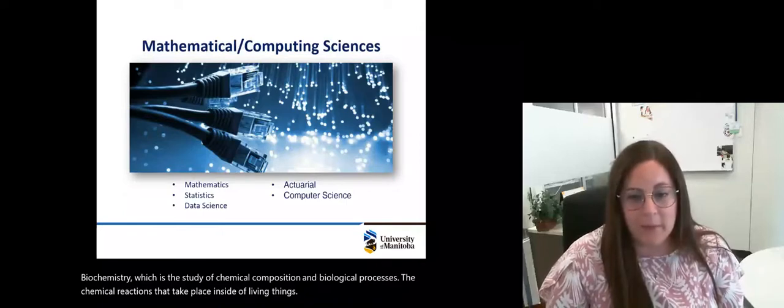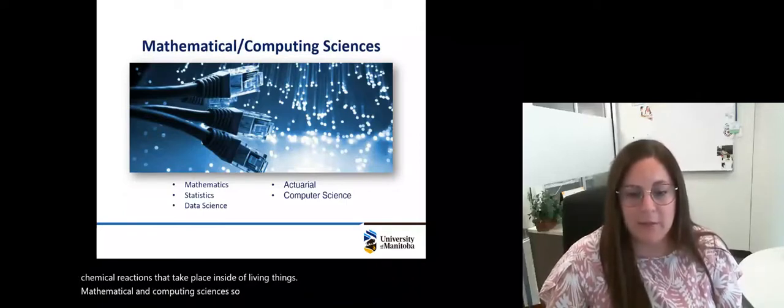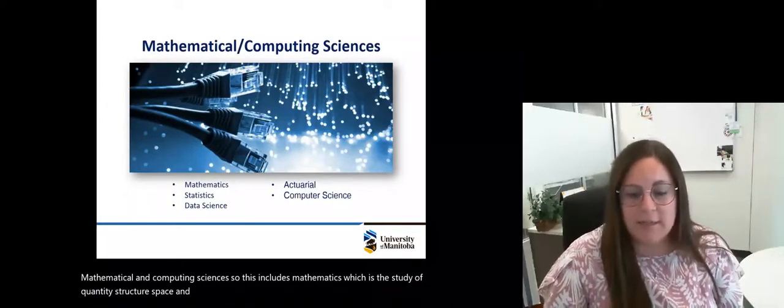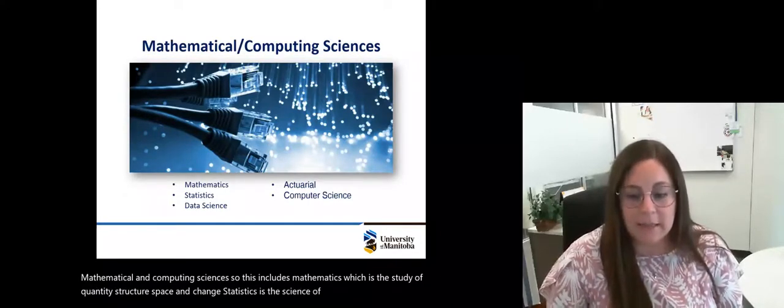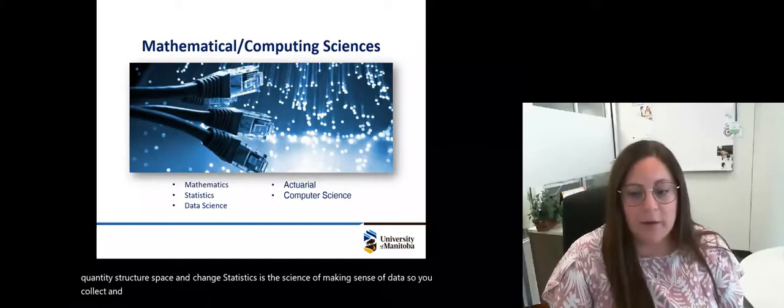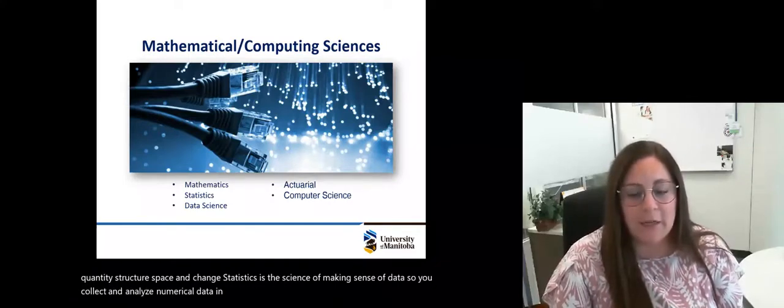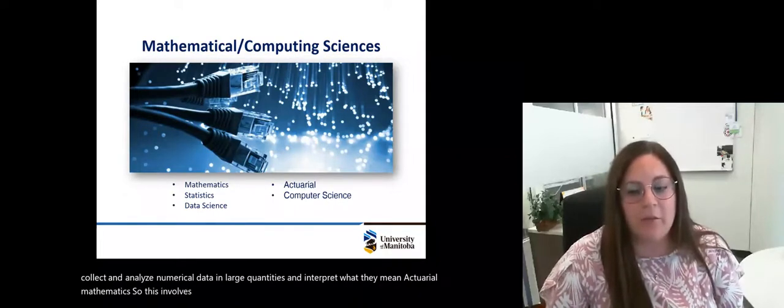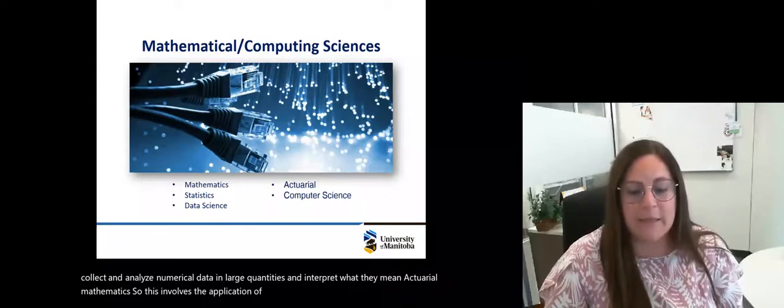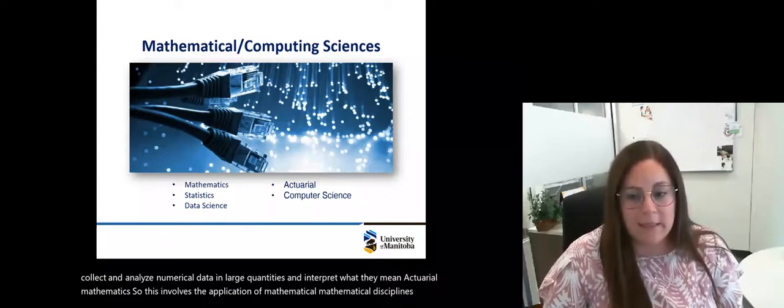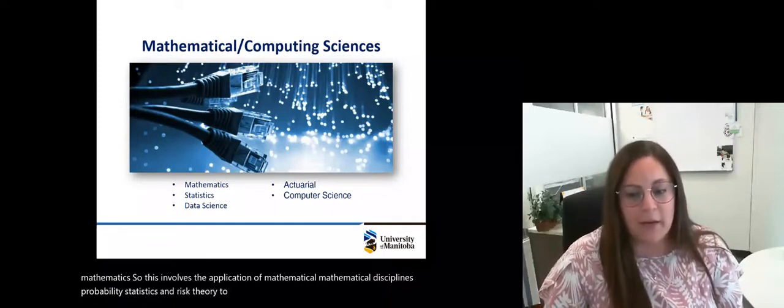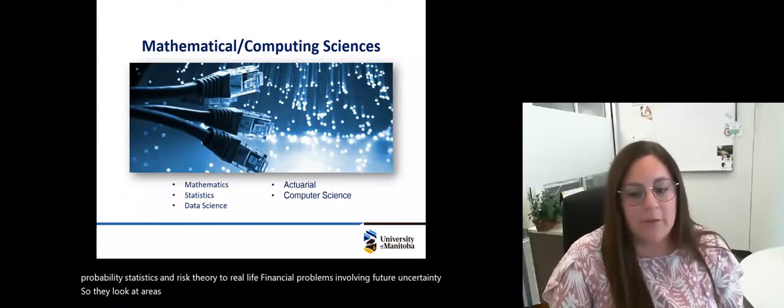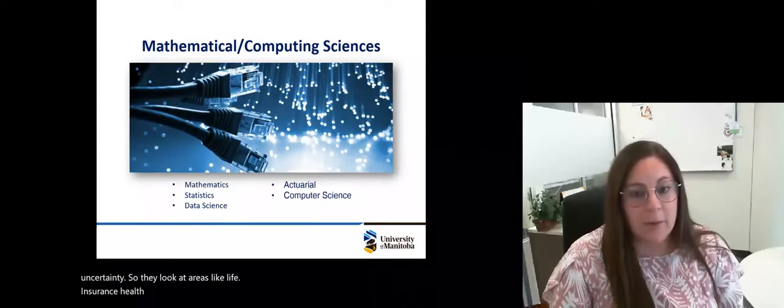Mathematical and computing sciences includes mathematics, which is the study of quantity, structure, space, and change. Statistics is the science of making sense of data—you collect and analyze numerical data in large quantities and interpret what they mean. Actuarial mathematics involves the application of mathematical disciplines, probabilities, statistics, and risk theory to real-life financial problems involving future uncertainty, looking at areas like life insurance, health insurance, and employee benefit plans.